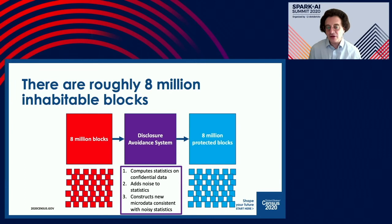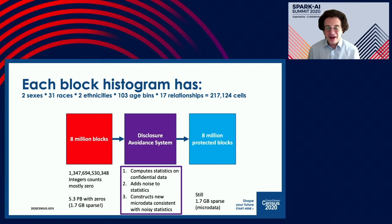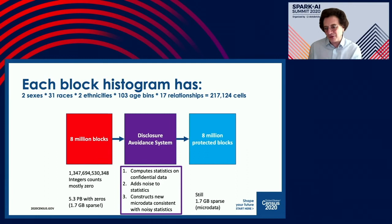Our original mechanism — the block-by-block mechanism — started with 8 million habitable blocks, added noise to each histogram, and created 8 million protected blocks. This version of the histogram has about 217,000 cells. We start with 5.3 petabytes of zeros, but 1.7 gigabytes of actual data since it's sparse. We run that through the disclosure avoidance system and coalesce it into a new set of microdata — going from 1.7 gigabytes to 5.3 petabytes and back to 1.7 gigabytes.